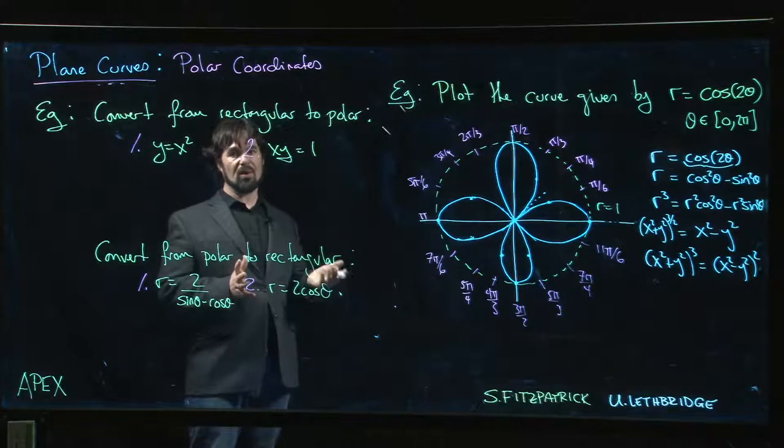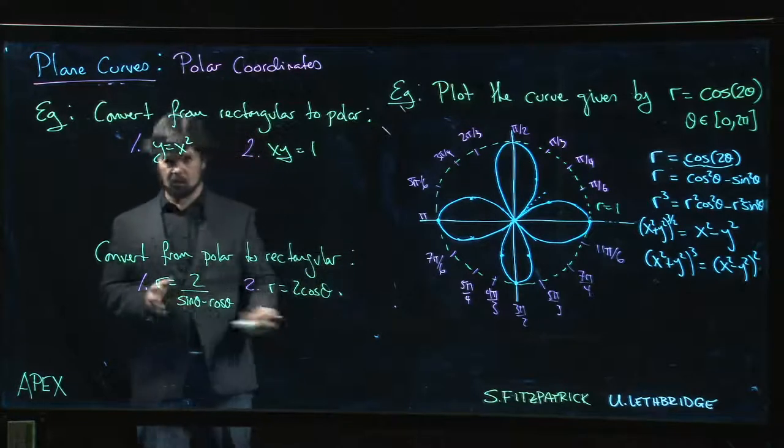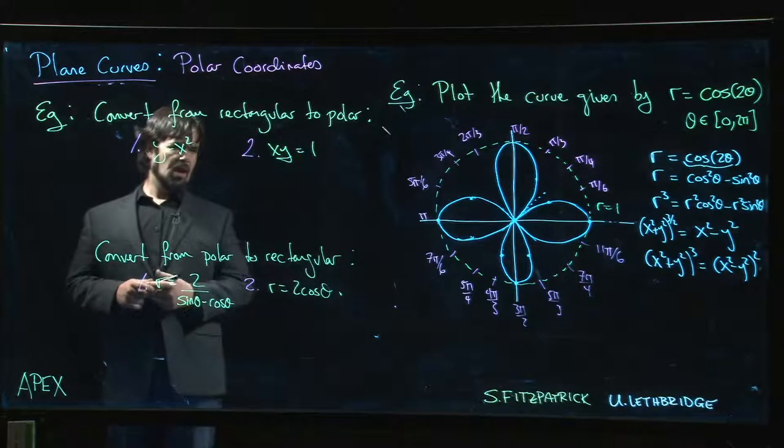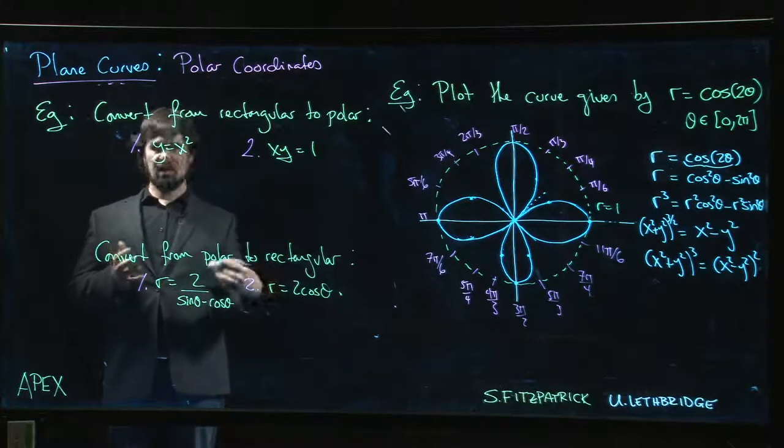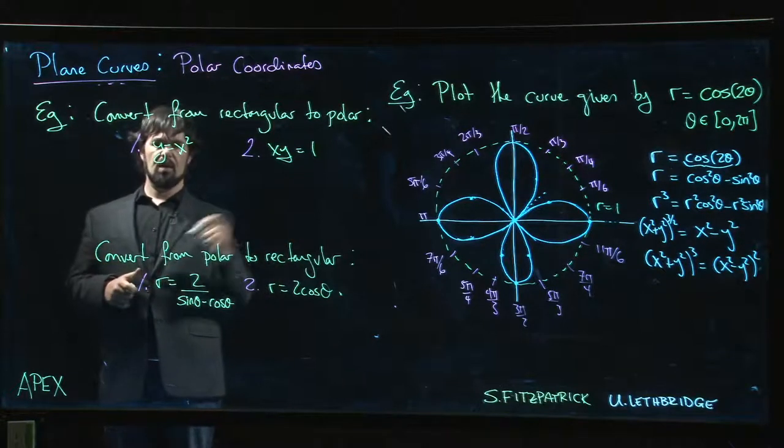Sometimes polar is easier to deal with. It's easier to see what's going on in polar coordinates. On the other hand, sometimes rectangular is better, but we'd like to be able to jump back and forth.